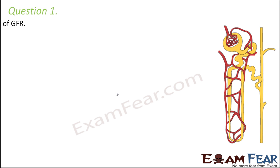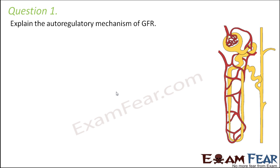Let us look at question number 1. It says: explain the auto-regulatory mechanism of GFR. I hope you remember what GFR is — it is glomerular filtration rate. The amount of filtrate which is formed, that is which gets into the Bowman's capsule per minute, is known as the glomerular filtration rate.